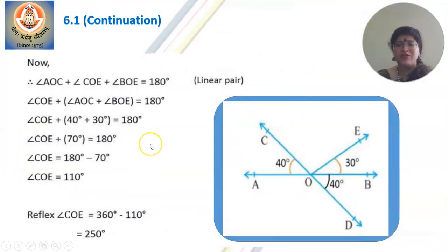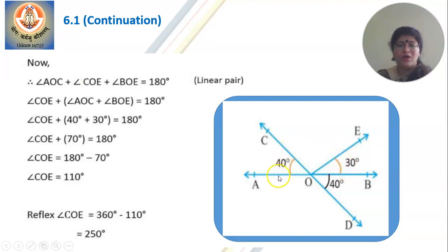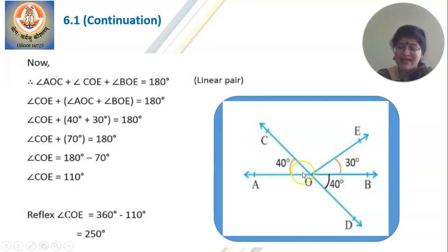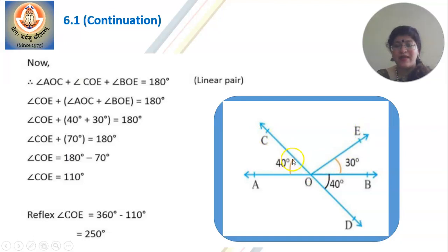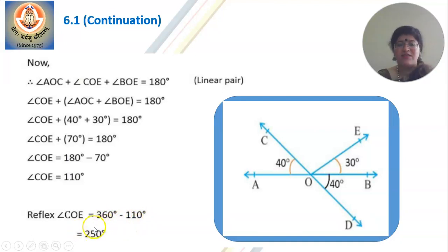This is a continuation of the first question. You know which angles form a linear pair — all these angles form a linear pair. So 40 plus 30 plus what will give you 180 degrees? With that you get angle COE as 110 degrees. Once you get this as 110, can you find the reflex angle COE? They have asked you to find COE — we got it as 110. So reflex angle COE equals 360 degrees minus angle COE, which is 360 minus 110, that is 250 degrees.